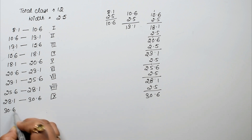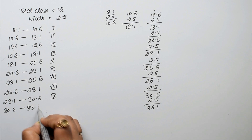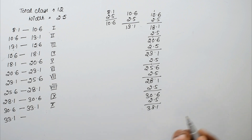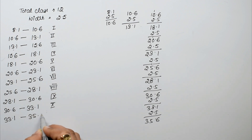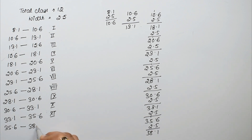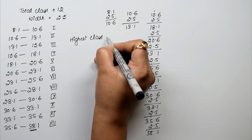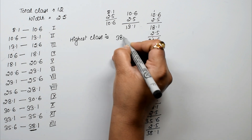From 30.6, add 2.5 to get 33.1 — this is the 10th class. Then 33.1 + 2.5 = 35.6, the 11th class. Finally, 35.6 + 2.5 = 38.1, which is our 12th class. So the upper class boundary of the highest class is 38.1. That is the answer.